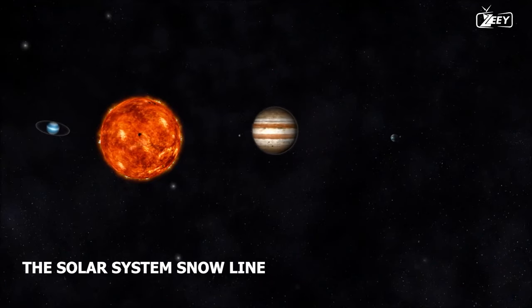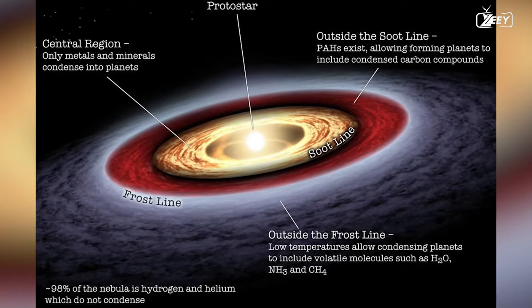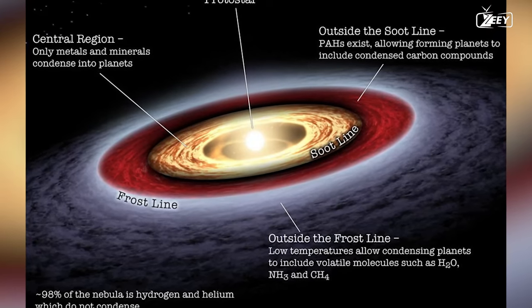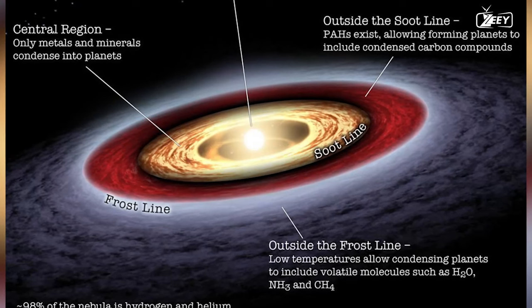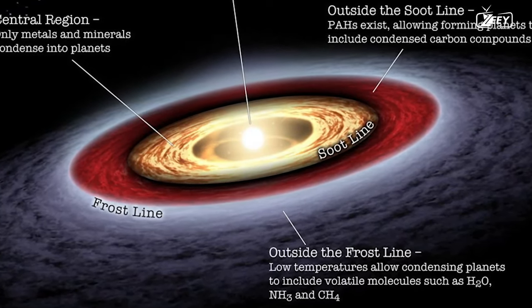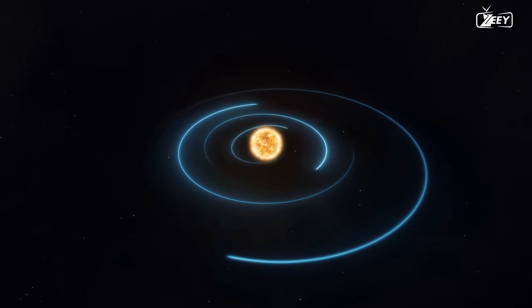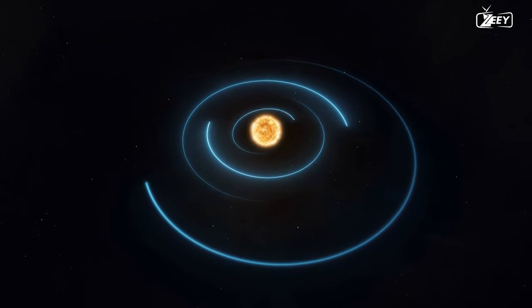The solar system's snow line is an additional vital factor to consider. The snow line is an imaginary line in the solar system that separates regions where solid substances freeze and create water ice from regions where these substances evaporate and remain gaseous. The location of the snow line varies based on the sun's distance, the local pressure, and the temperature.